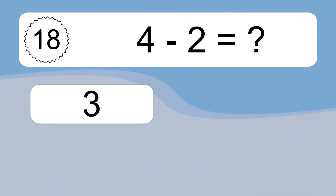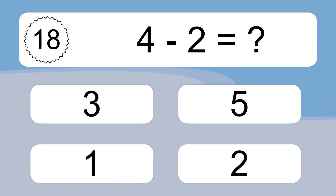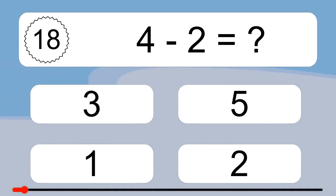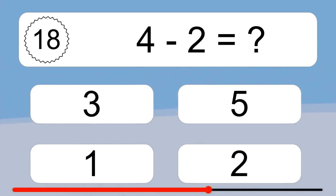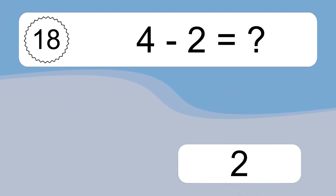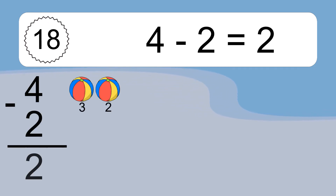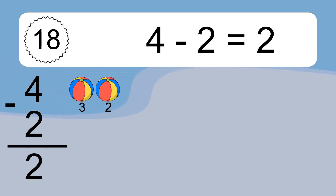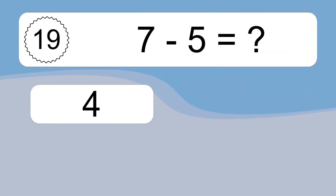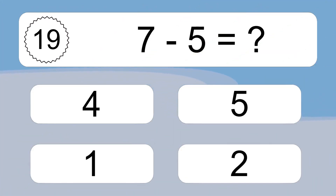4 minus 2 equals what? 4 minus 2 equals 2. Let's count it. 3, 2.